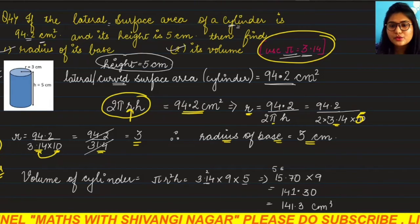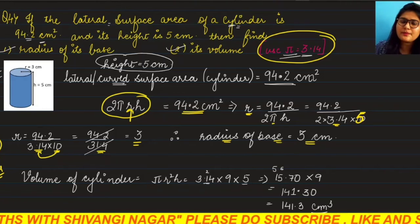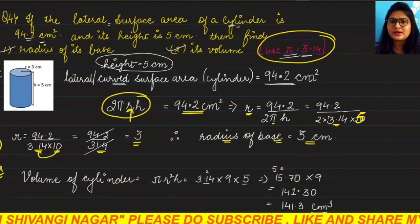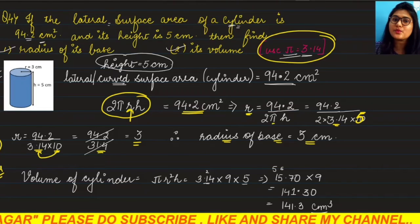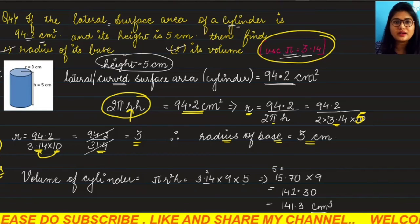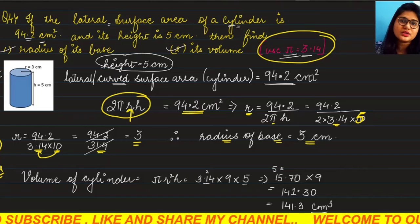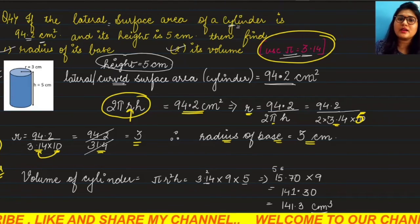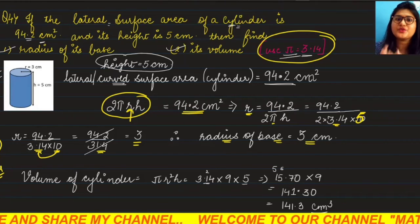So simple question - you were given lateral curved surface area and height of cylinder, so you had to compute radius. Once radius is found and height is already given, just apply volume formula and find out volume of cylinder.